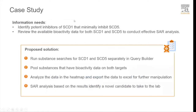So it's really critical for the success of the project to develop a potent inhibitor of SCD1 that minimally inhibits SCD5. To do that, there are two types of information that we need. First, we need to identify potent inhibitors of SCD1 that minimally inhibit SCD5. And secondly, we need to review the bioactivity data for both SCD1 and SCD5 in order to identify scaffolds that have sufficiently different R-groups in order to conduct an effective SAR analysis.